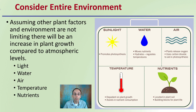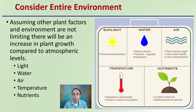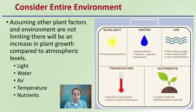You want to consider the entire environment. Assuming other plant factors and environment are not limiting, there will be an increase in plant growth compared to atmospheric levels. Those other factors to consider are light, water, air, temperature, and nutrients — all need to be optimal. Keep in mind, when supplementing carbon dioxide and plants want to grow more aggressively, they may need more nutrients and more water. Depending on how you're adding the carbon dioxide, watch the temperature and air circulation as well.